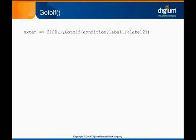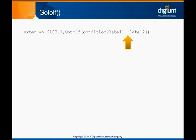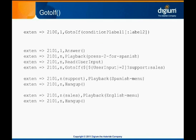GoToIf is a more complex but robust version of GoTo. It consists of a condition and one or two address labels. Each address label uses the same syntax as the argument to GoTo, where the priority must be specified and the extension and context may or may not be. A question mark separates the condition from the first label, and a colon separates the first label from the second. Either, but not both, of the labels may be omitted. When the GoToIf application is executed, the condition in the first parameter is evaluated.